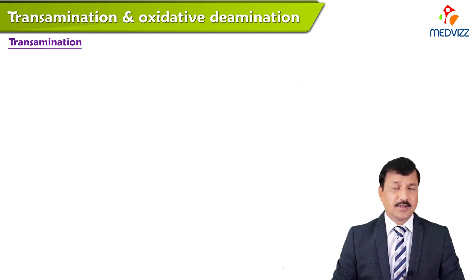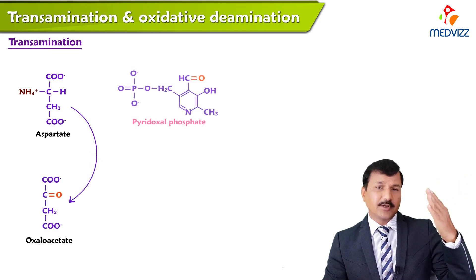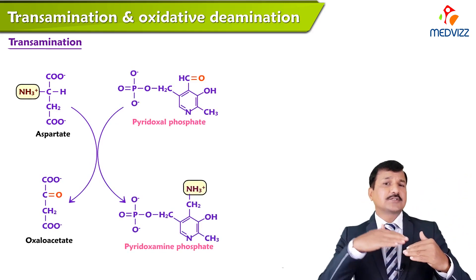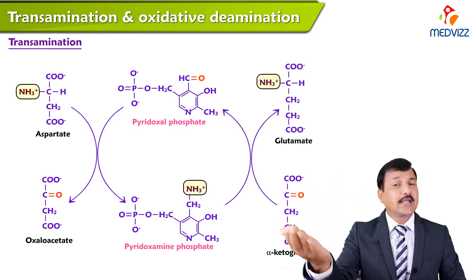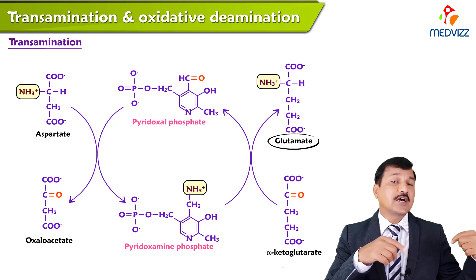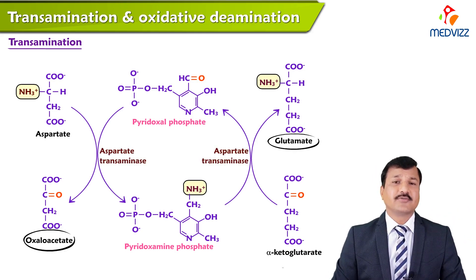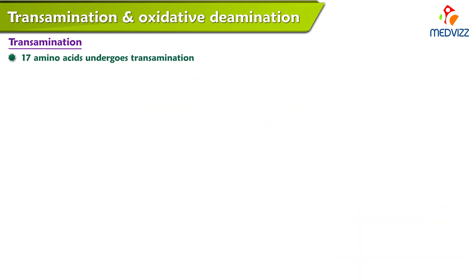Another example is aspartate transaminase. Aspartate transfers its amino group to pyridoxal phosphate, which then transfers it to alpha-ketoglutarate, making glutamate, while aspartate is converted to its corresponding keto acid, oxaloacetate. This is how transamination works for 17 standard amino acids. Four amino acids do not undergo transamination: proline, hydroxyproline, and lysine.